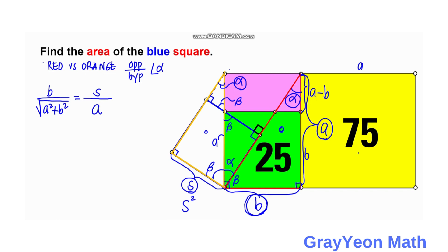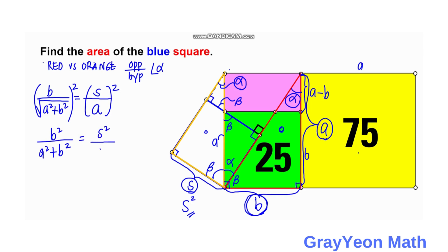Since we are interested in finding S squared — the area — we square both sides of the proportion. This gives us B squared over (A squared plus B squared) equals S squared over A squared. Solving for S squared: S squared equals A squared times B squared, all over A squared plus B squared. This is the derived formula for the area of the blue square.